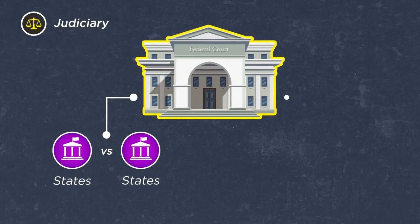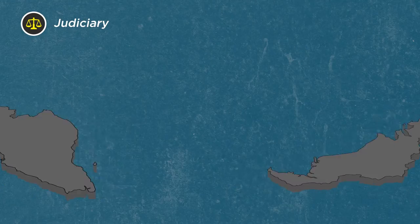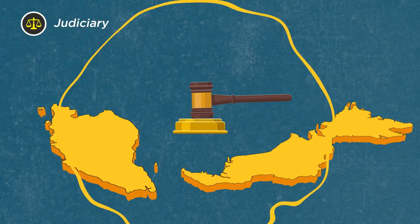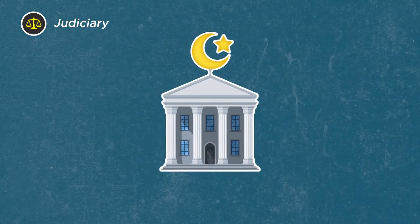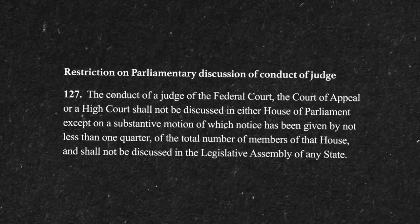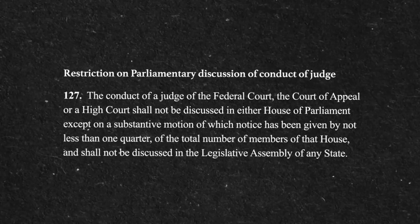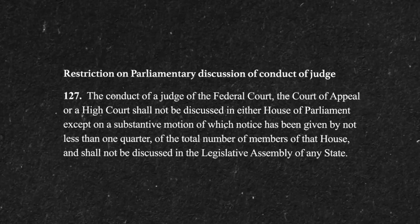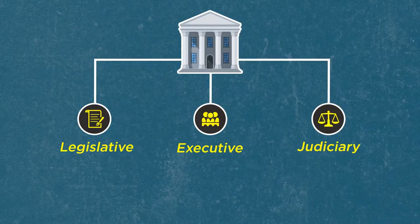Any disputes between states, or between states and the Federal Government, can only be brought to the Federal Court. The primary judiciary system in Malaysia is a federalised court system that functions uniformly nationwide. The Sharia courts, however, function in parallel to civil courts and only have jurisdiction over matters of state Islamic law, which involves Muslims. The provision of different, separate functions and powers for these three institutions is outlined in Article 127 of the Constitution as the separation of powers. It simply means that the power to govern the country is divided between three different and independent bodies, ensuring none become too powerful.